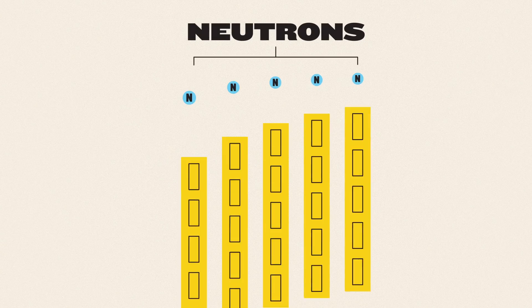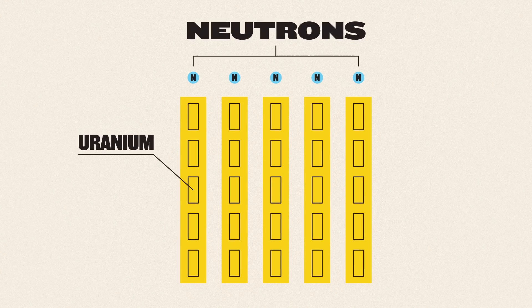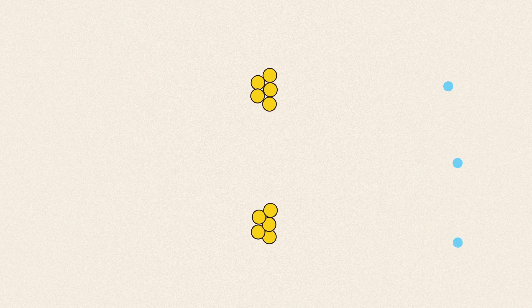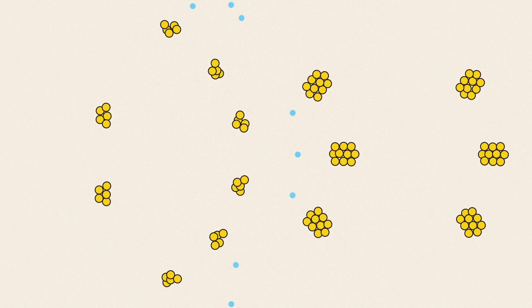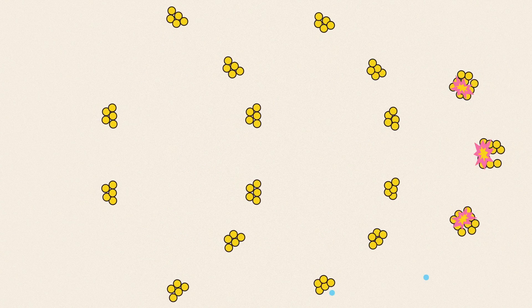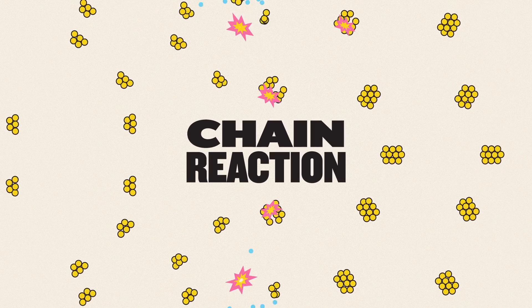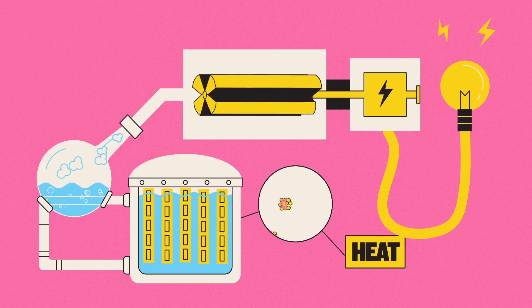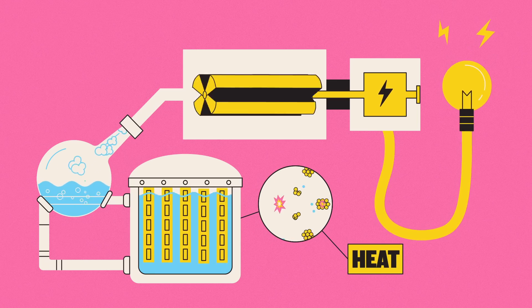Inside a plant's reactor, subatomic particles called neutrons are fired at pellets of uranium held in long metal tubes. This causes the uranium atoms to split into different, lighter ones, and release more neutrons, which split more uranium, and so on, in a chain reaction. Every split also releases energy in the form of heat, which is used to boil the water.